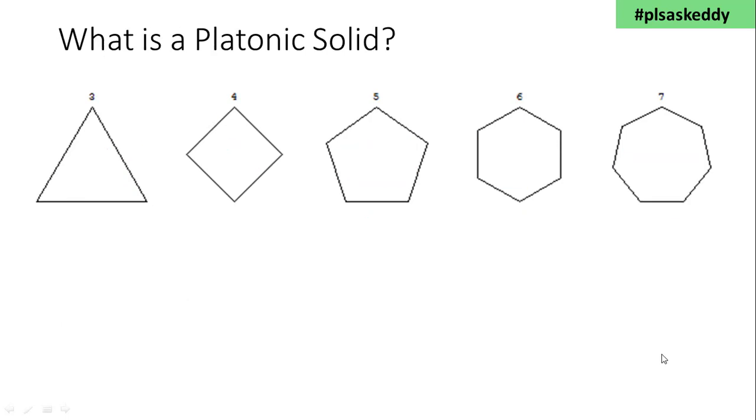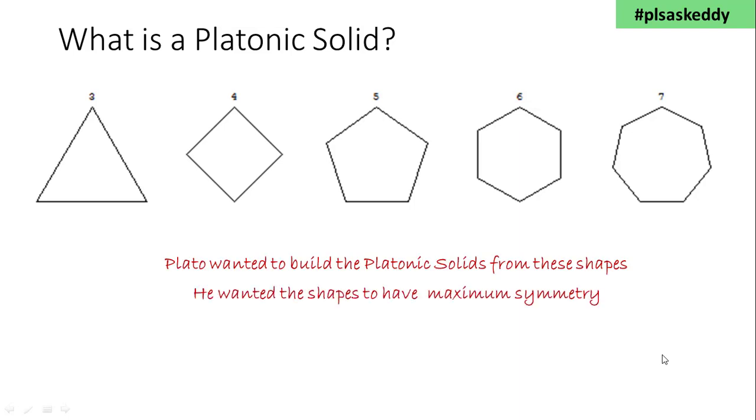We'll try to build some three-dimensional shapes with these. Plato wanted to build three-dimensional shapes that use the same regular two-dimensional shape for each of its faces. And to keep perfect symmetry, he wanted the same number of shapes at each vertex or corner. It's better to see a visual explanation of what he did.